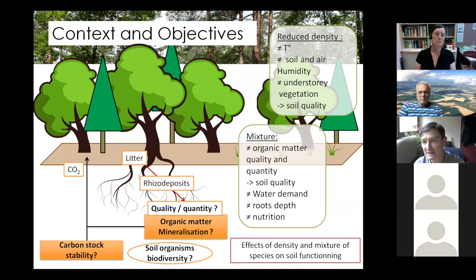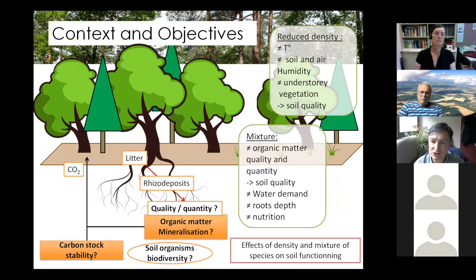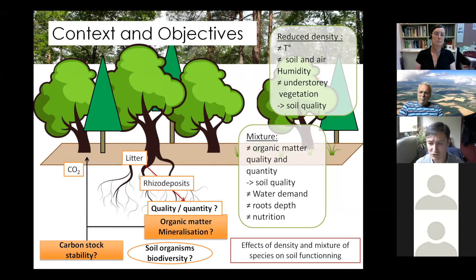We know that reducing density involves different temperature and different soil and air humidity. We are going to have different understory vegetation, which will lead to different soil quality. When we have a mixture of species, we also get different organic matter quantity and quality, which influences soil quality, but also different water demand, different root depth exploration, and different nutrition depending on the species present.